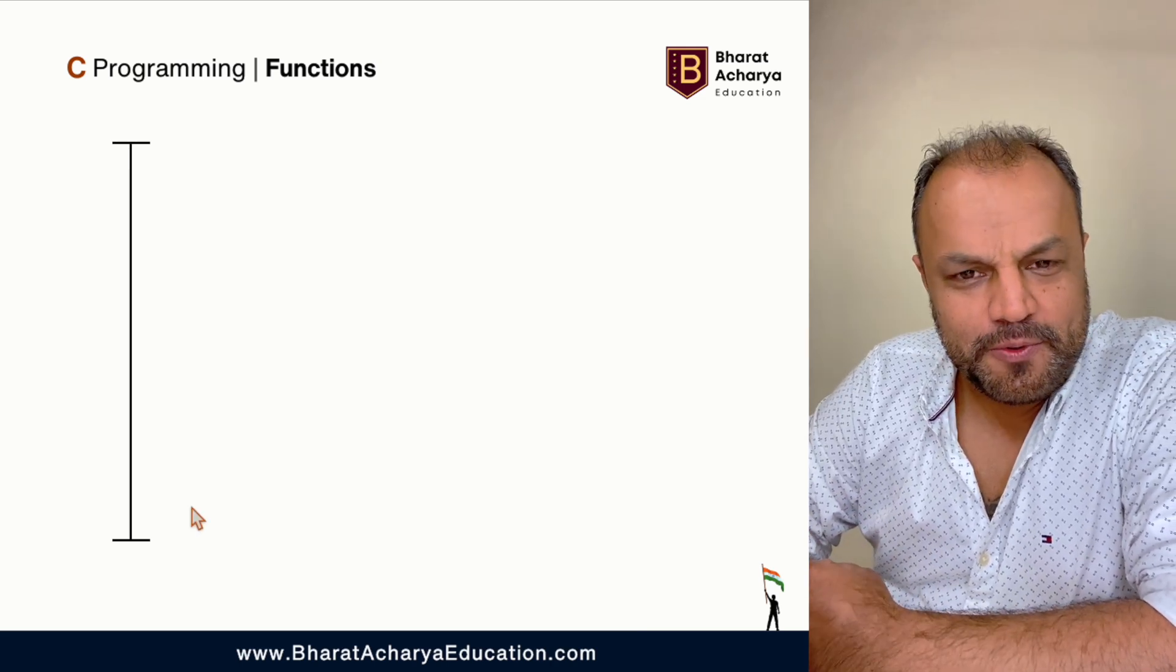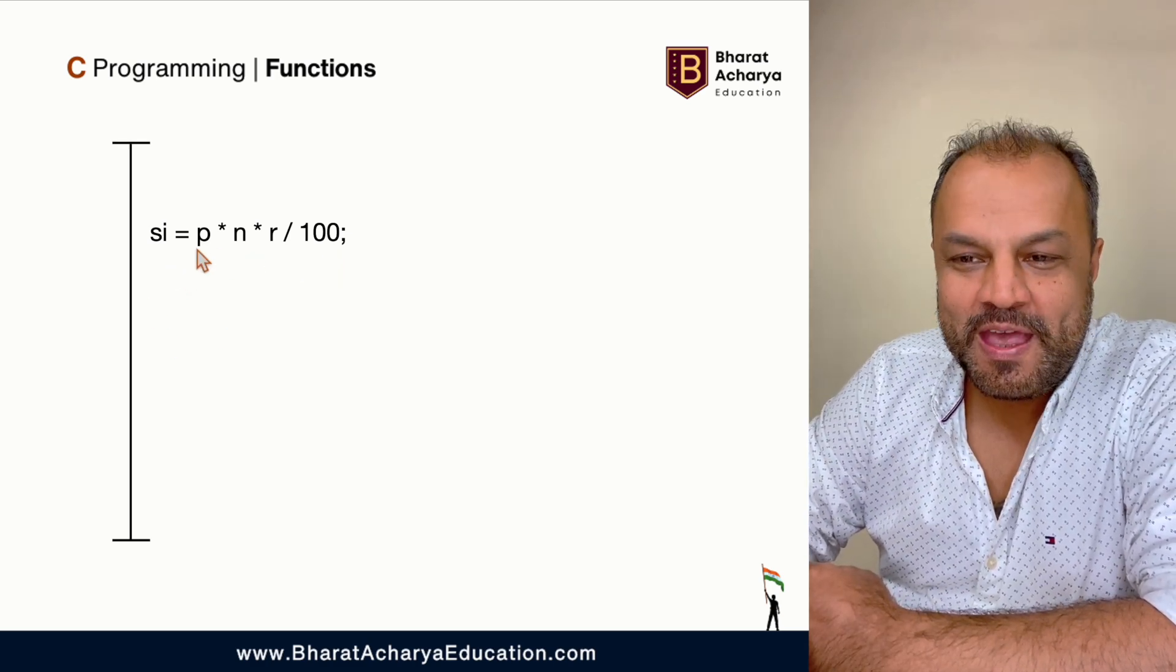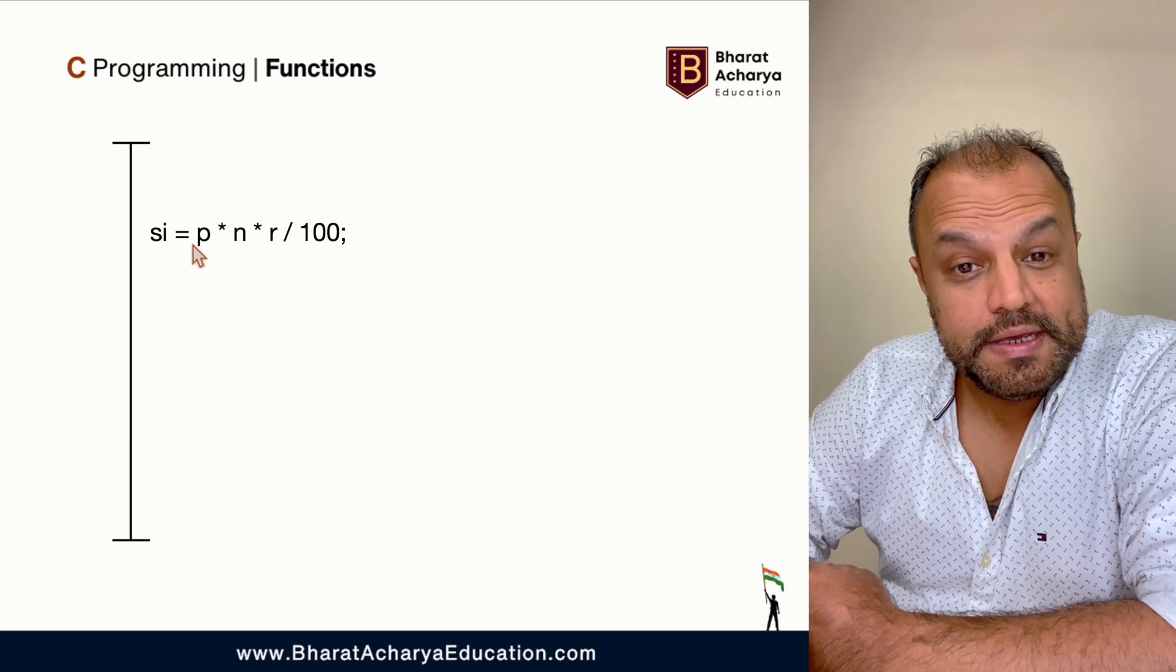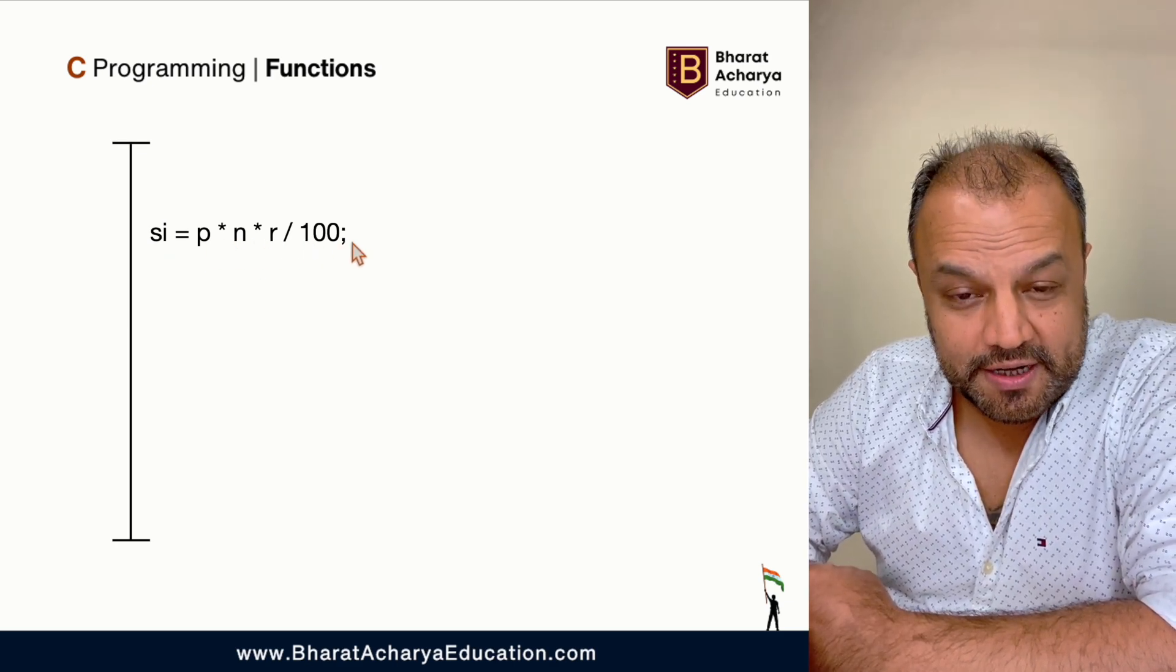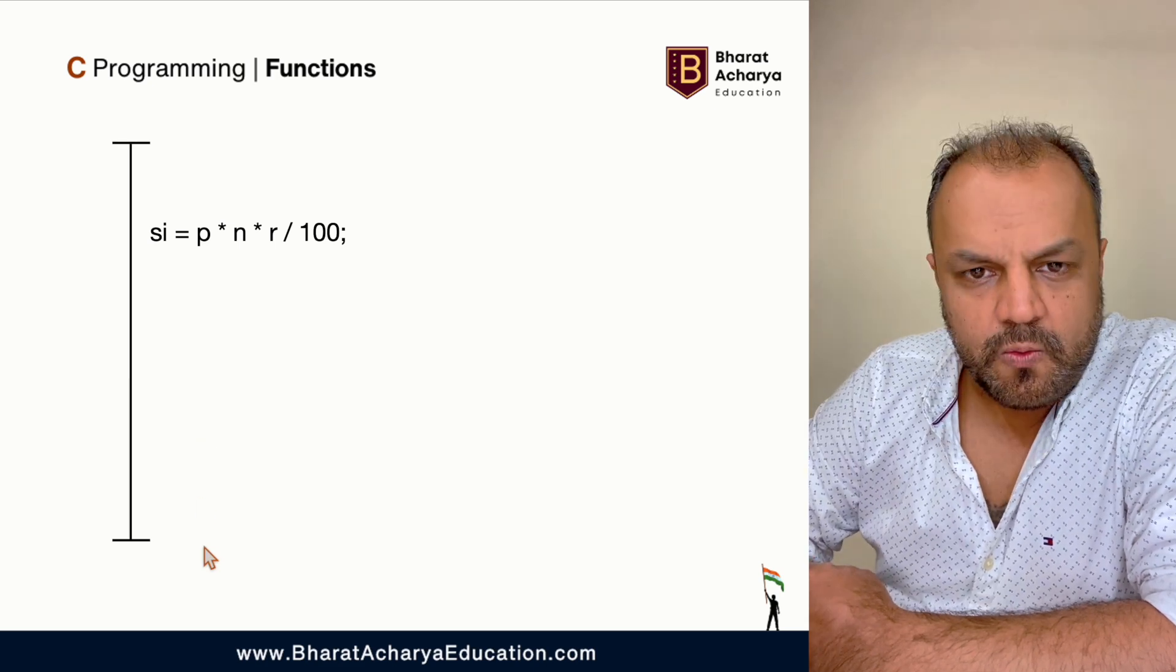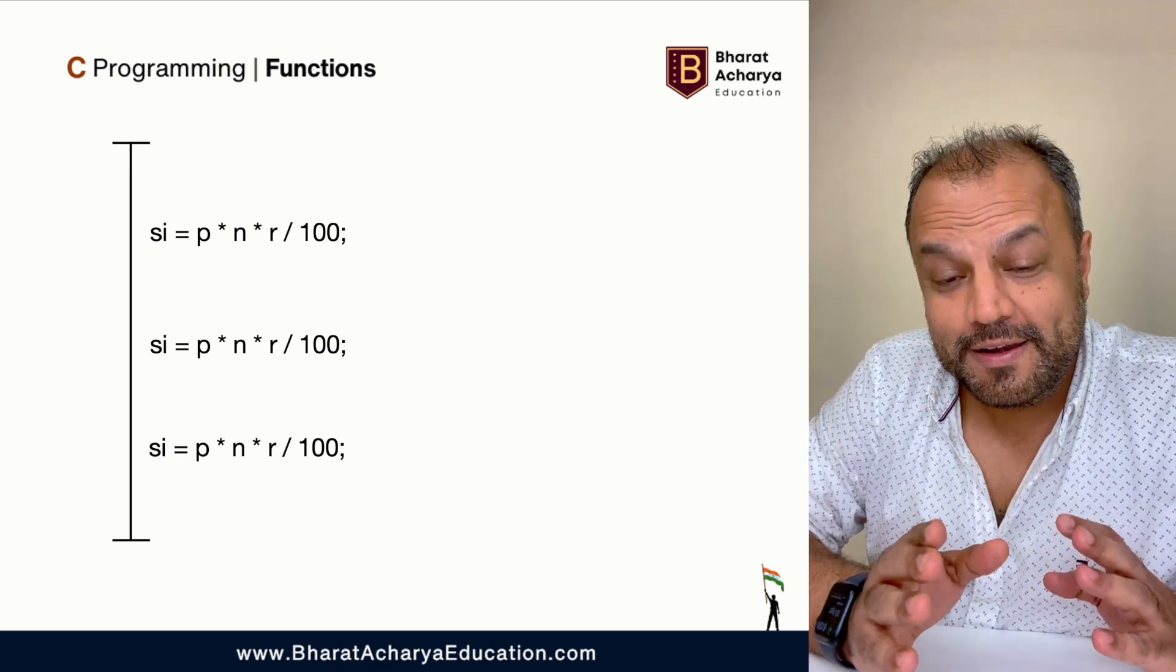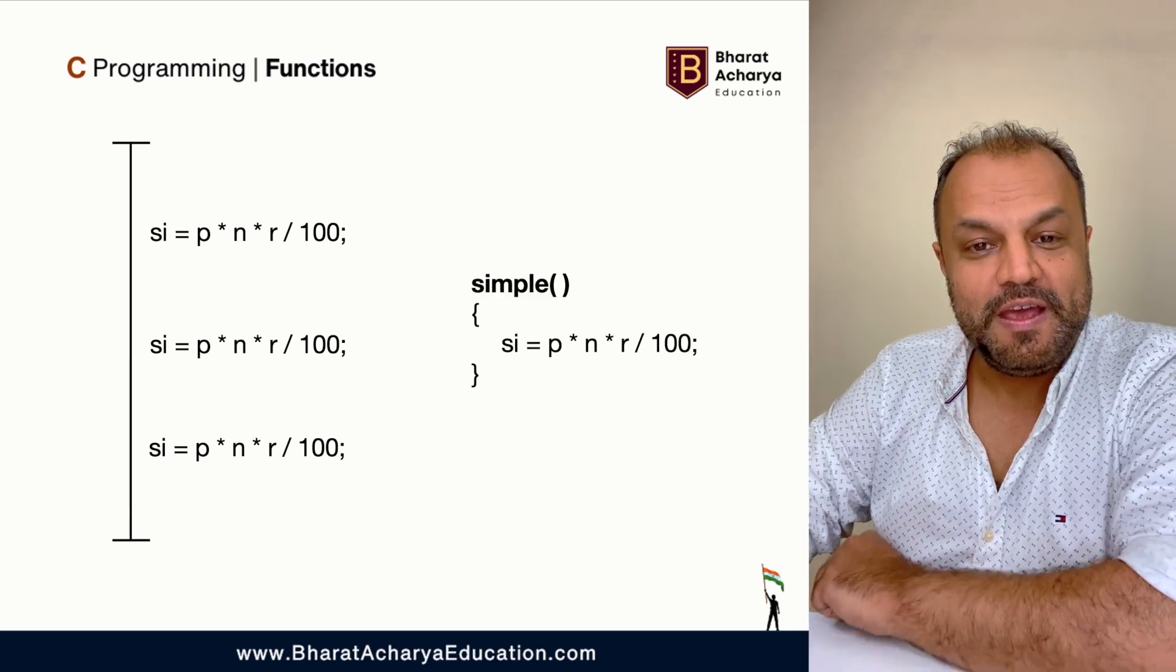Suppose this is a big financial program. Okay. You need to calculate this. What is this? Simple interest. P into N into R upon 100. You need to calculate this at various places. Let's say 100 different places. You're doing a big financial project. At 100 different places, you need to run this line to calculate simple interest. Now, this is something that can be done in one line in C programming. You agree? This is actual C programming code. P into N into R slash 100 divided by 100. Correct? So this can be done by one line. I need to do this at 100 different places. One option, I copy and paste this line at all those 100 places, which is fine. This is what people would have done. The other option is what we learned today. If you want to do something at different, different places, the same set of things at different places, make a function.